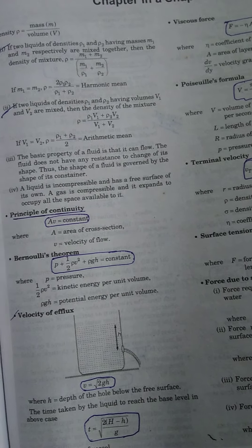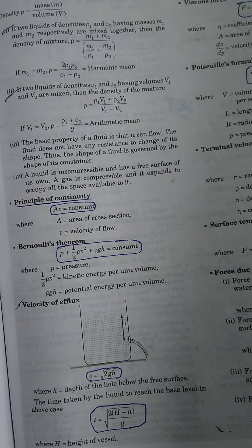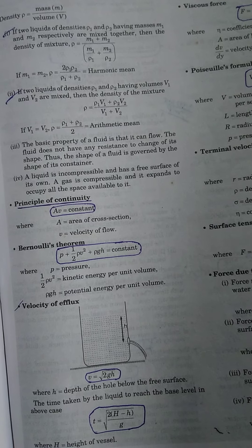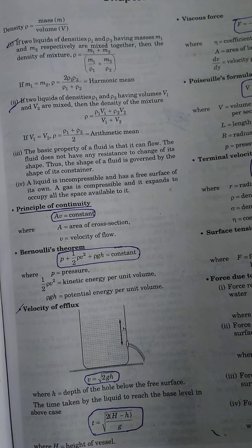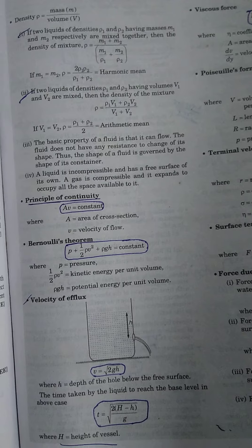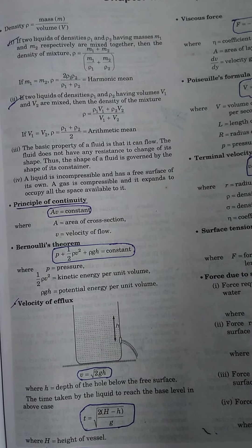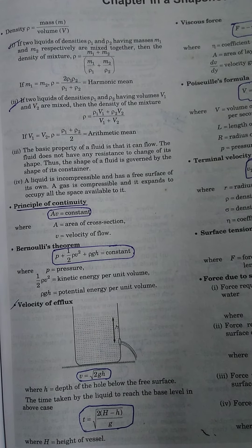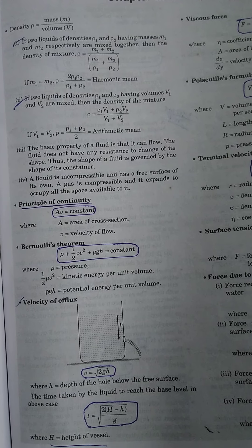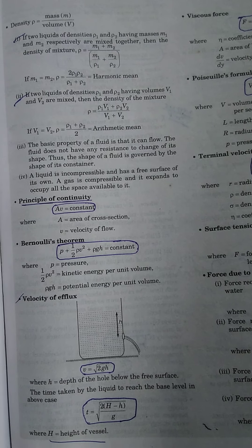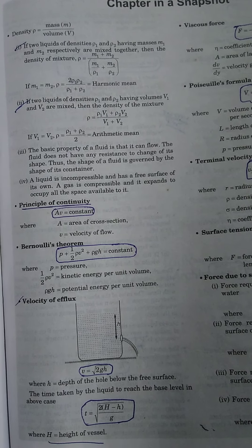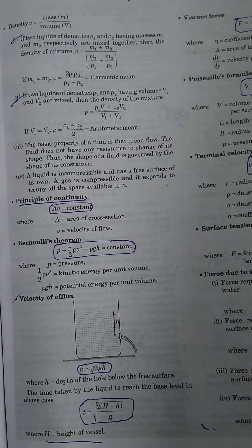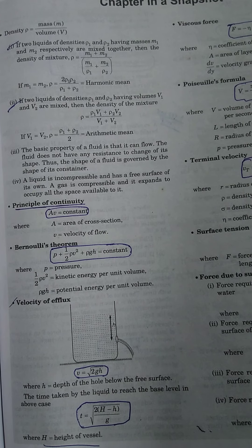If m1 is equal to m2, then ρ is equal to 2ρ1ρ2 upon ρ1 plus ρ2. This is the harmonic mean. If V1 is equal to V2, then the density becomes the arithmetic mean.